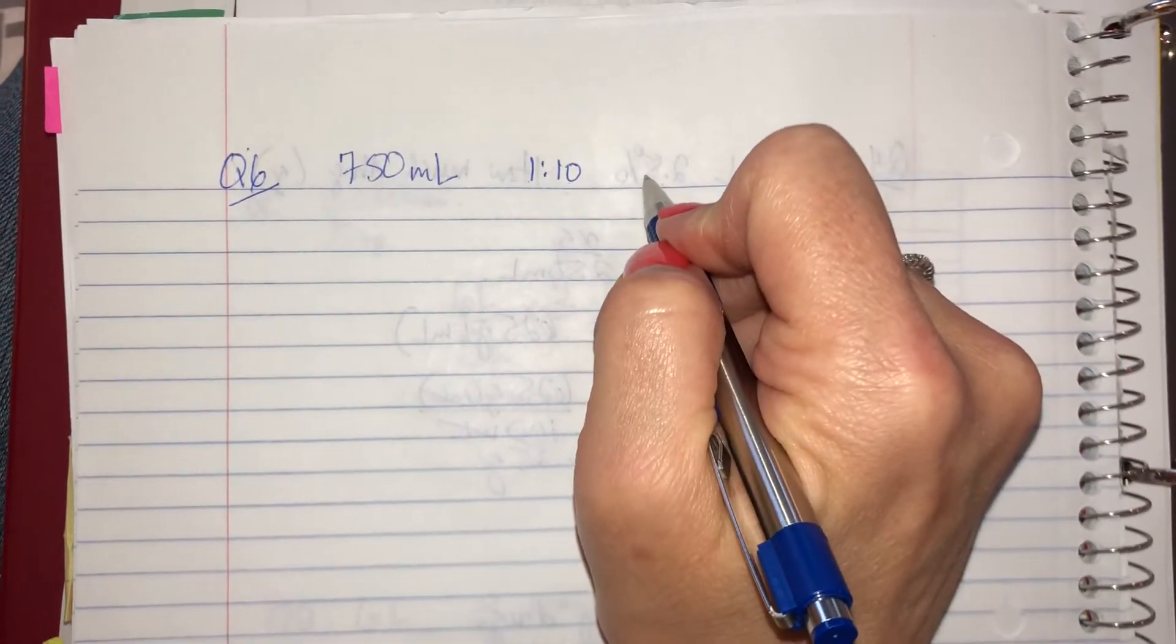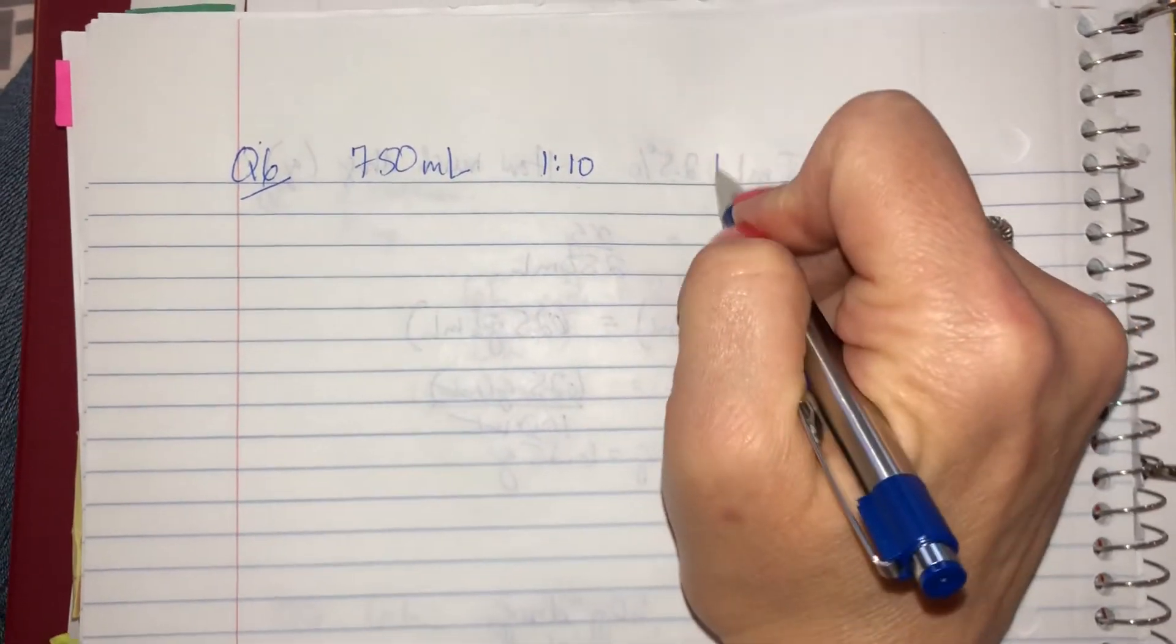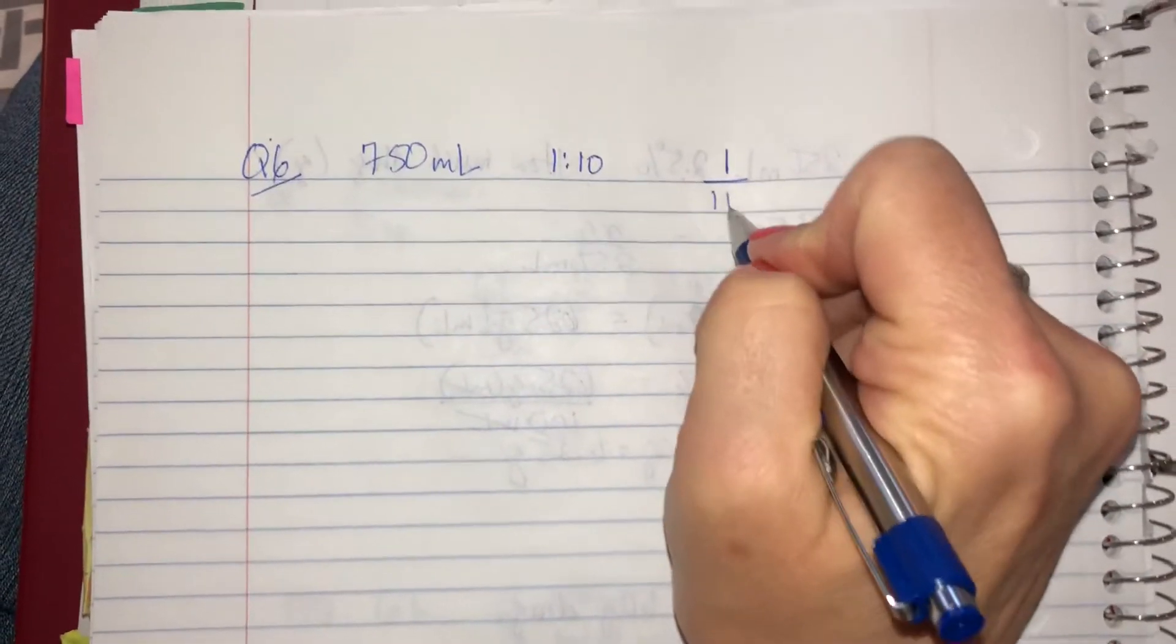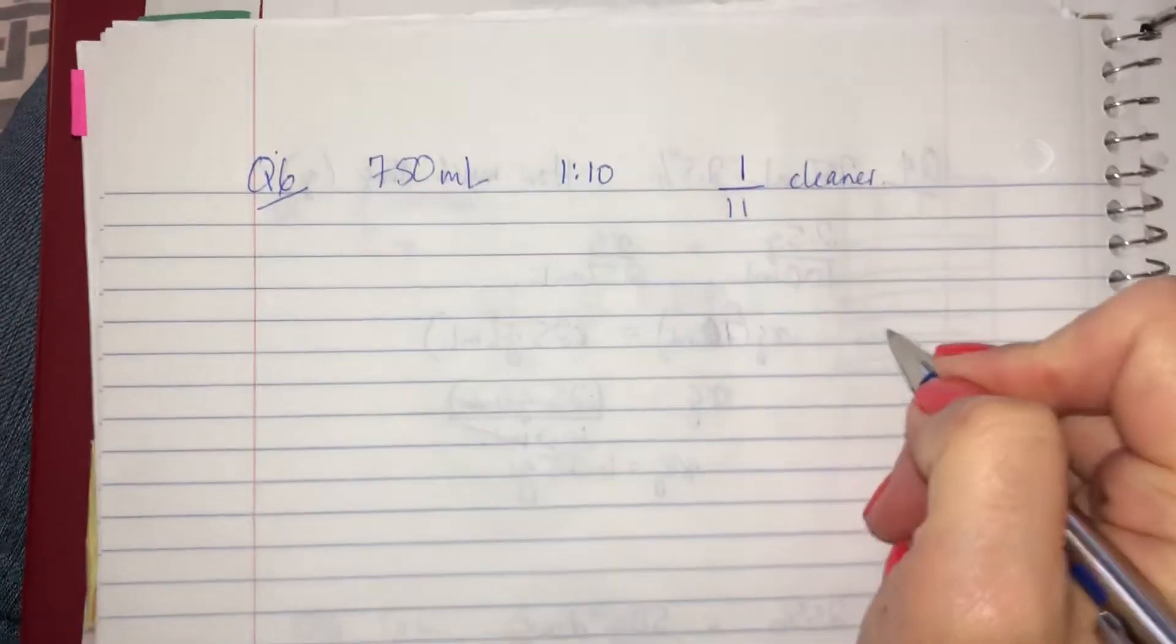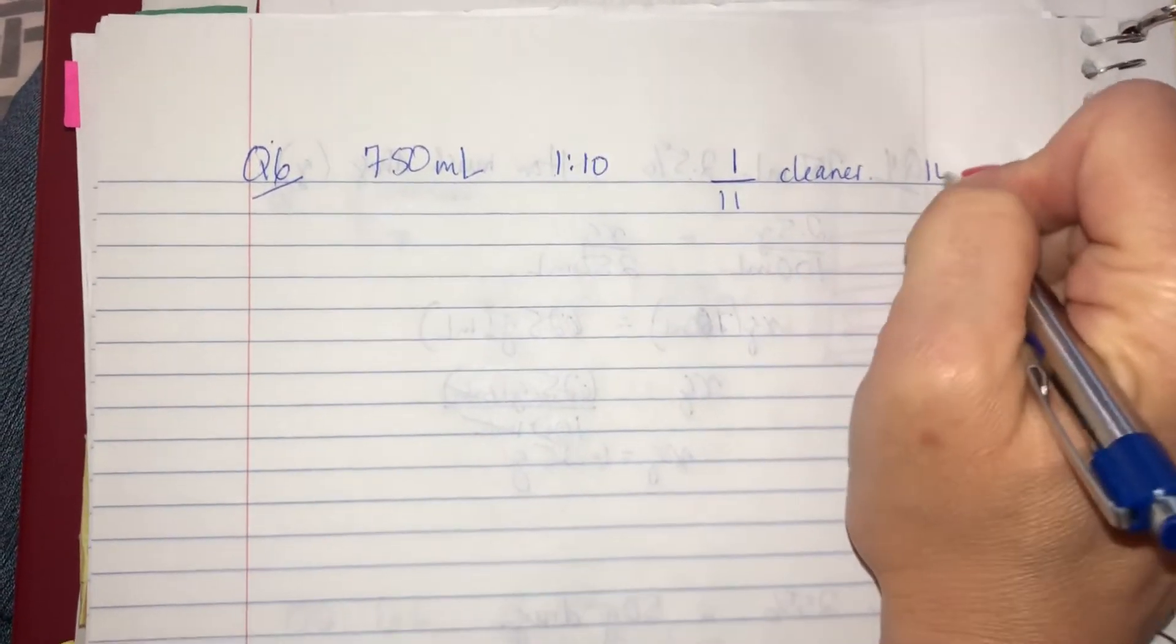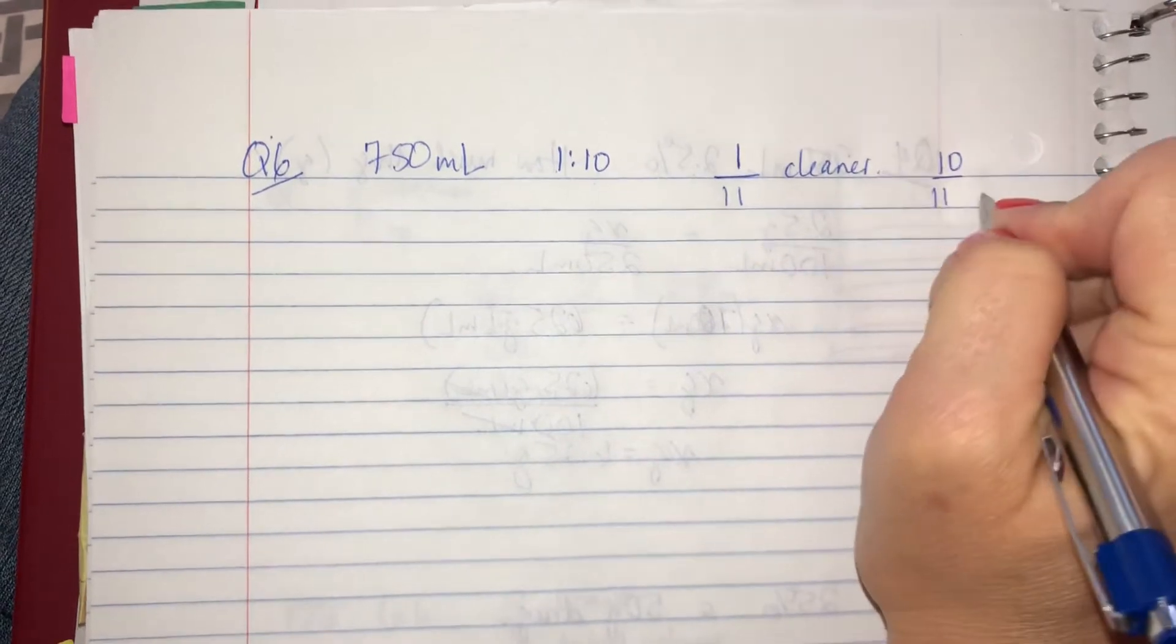If I was going to write that as a factor, it would be one part cleaner in 11 total parts. It would also be 10 part water in 11 total parts.